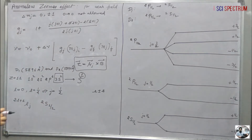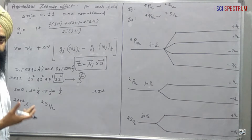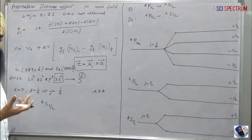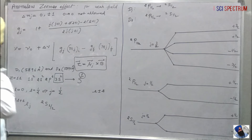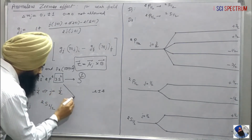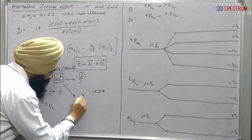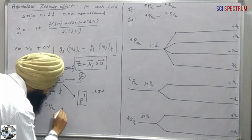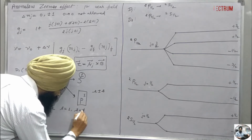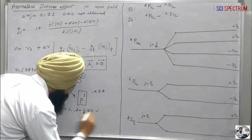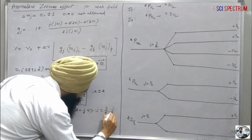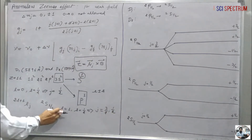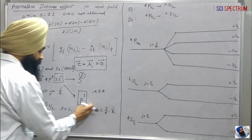This is the ground state where the electron is de-excited. If this electron is excited to a higher state, it may go to the p state. For the p state, we have l equals one and s equals half, giving j values of 3/2 and 1/2. You can learn how to calculate these values from our previous lectures.